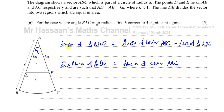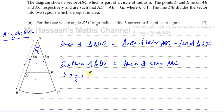To find the area of triangle ADE with two sides KA and KA and included angle π/6, we use the formula: area = ½ × AB × sin C. So we have two times ½ times KA times KA, which is KA squared, times sine of π/6, equals the area of sector ABC.